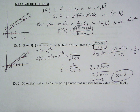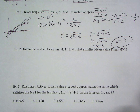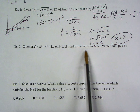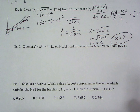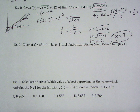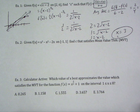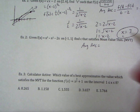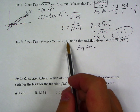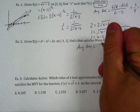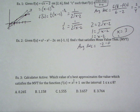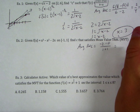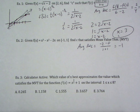Next example: given a function on the interval, find C that satisfies the mean value theorem. We do the same thing — find the average rate of change, find the derivative, set them equal. Average rate of change: using our slope formula, plugging in the endpoints 1 and negative 1, we get negative 2 minus 0 over 1 plus 1, which is negative 1.